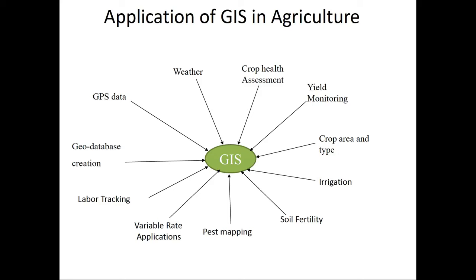Applications of GIS in agriculture are actually quite a few. An important area is yield monitoring. The other area is soil fertility and pest mapping. There are new areas emerging which relate to crop health assessment. GPS, the geographic positioning system, is a very important part of GIS applications in agriculture. It is highly useful in promoting precision farming, and geodatabase creation is also an important activity. GIS applications in agriculture are truly multi-dimensional.